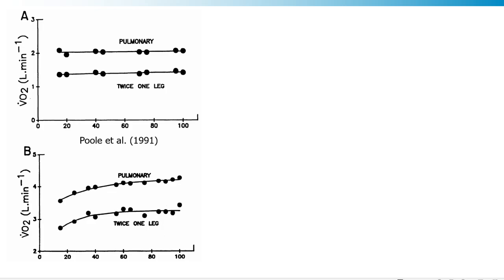Where's this slow component coming from? Well, in the early 1990s, David Poole and his group, working in Peter Wagner's lab, did an experiment where they simultaneously measured pulmonary VO2 and leg VO2. It's called twice one leg because they only catheterized one leg and they just took the VO2 that they measured and doubled it. That kind of made sense because everybody in their sample had two legs. And this is for moderate exercise in panel A and for heavy exercise in panel B. And you can see a close correspondence between pulmonary and leg VO2 in both cases. But the rise in pulmonary VO2 was also tracked by the rise in leg VO2. And what Poole et al. calculated was about 86% of the slow component they measured could be accounted for by the VO2 of the exercising leg. Much of the remainder comes from respiratory muscle work and cardiac work.